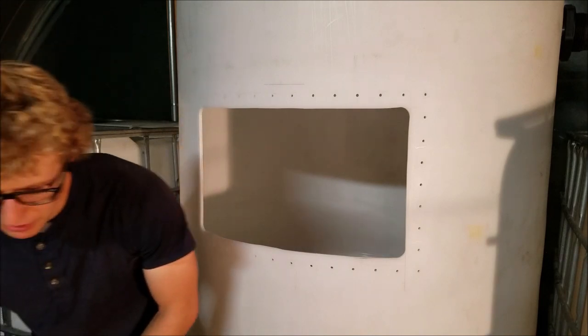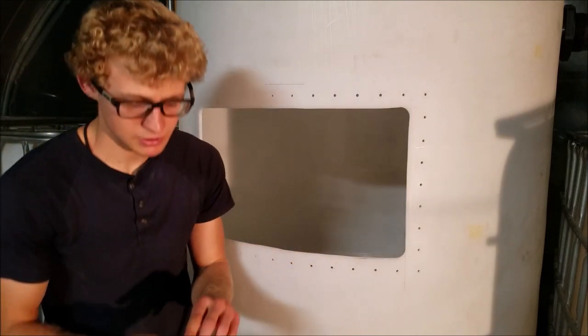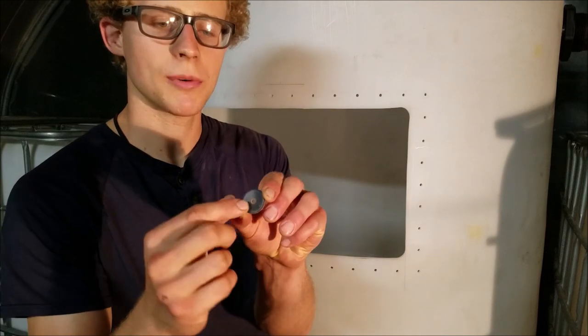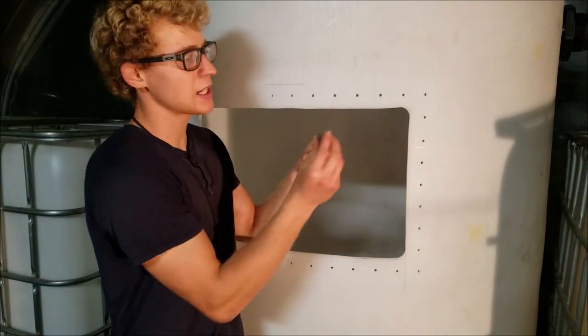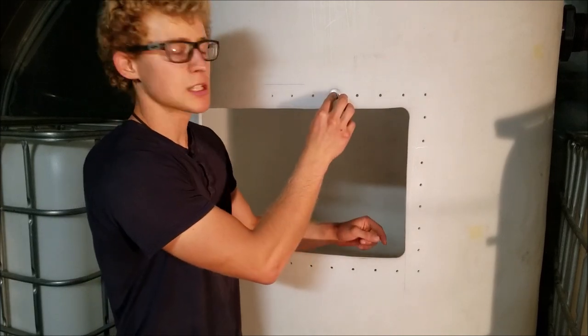Then we'll be using the washers this time. You see it has this kind of rubber seal around it. You have one on the inside and one on the outside, and you want this rubber part against the plastic like that.